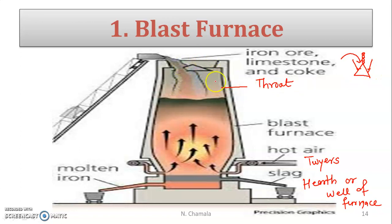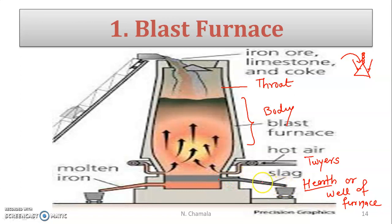The throat is the first part, the middle is the body, and the bottom part is called the hearth or well of furnace. The hearth has two openings — one at the top and one at the bottom. Through the top opening, slag is removed. Slag is nothing but gangue plus flux.